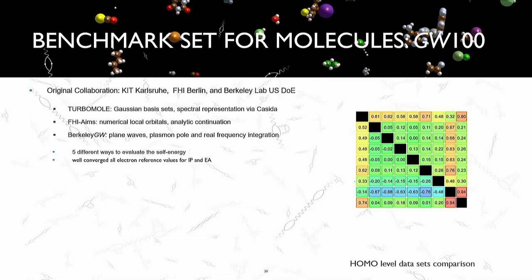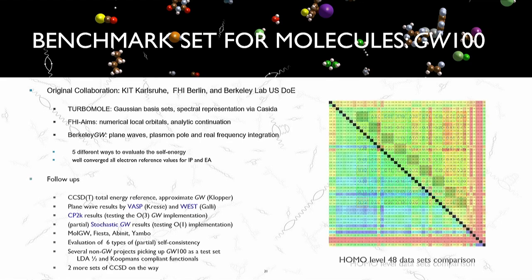So now, for benchmarking GW. We started with molecules. In the first project, three groups were involved; in the end, we had five different ways to evaluate the self-energy. After a project of about four years, we managed to get very well-converged ionization potentials and electron affinities. That was the state of affairs at that point. Currently, there are cluster calculations done for these molecules, plane-wave results by VASP and WEST, CP2K results — a local orbital code with a plane-wave expansion for the density — stochastic GW, MolGW, Fiesta, ABINIT, and JMBF is also currently preparing to start participating.